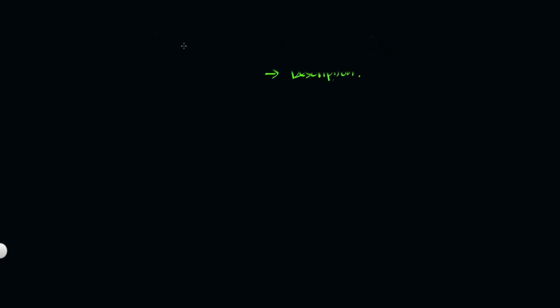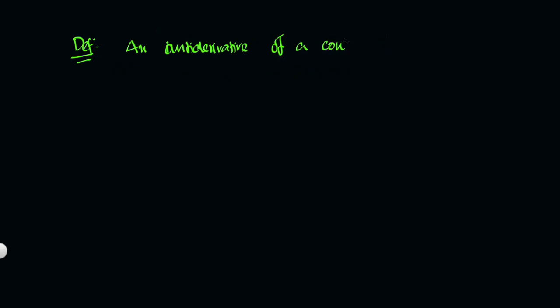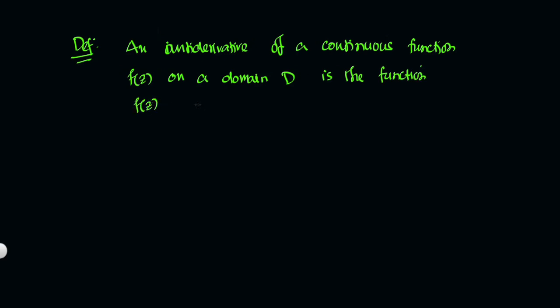Let's take the definition of anti-derivative. An anti-derivative of a continuous function f(z) on a domain D is the function F(z) — written with a capital F — such that F'(z) equal to f(z) for all z belonging to D.